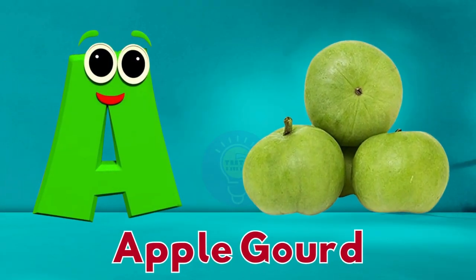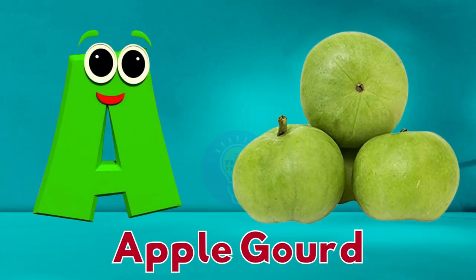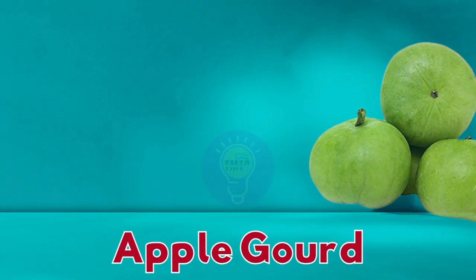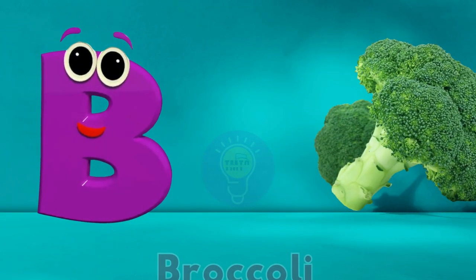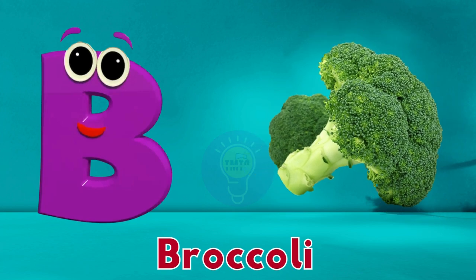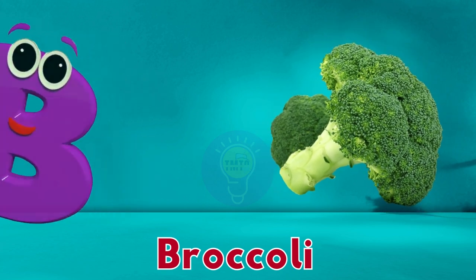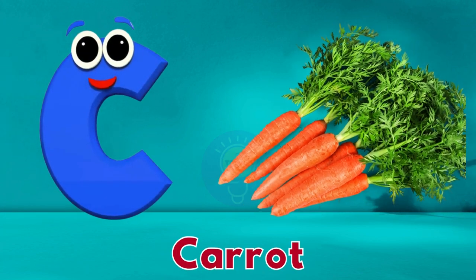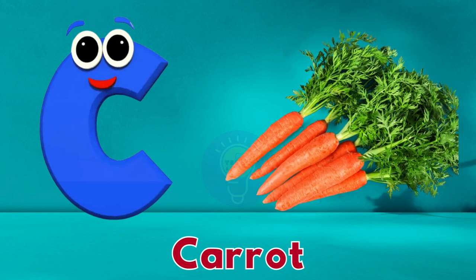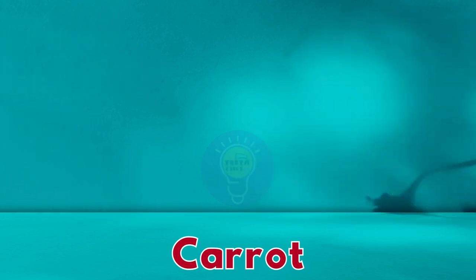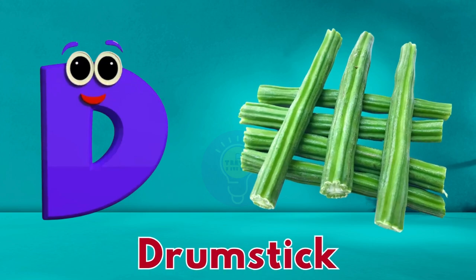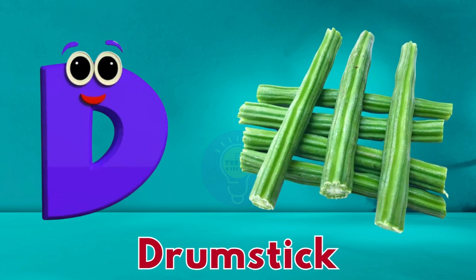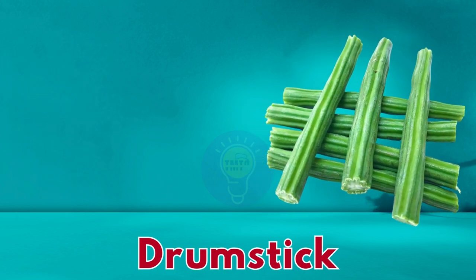A is for apple gourd, apple gourd. B is for broccoli, broccoli. C is for carrot, carrot. D is for drumstick, drumstick.